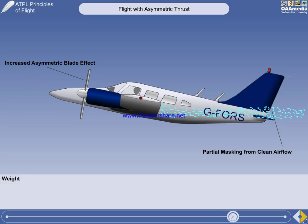Any weight increase will require a higher angle of attack at any given speed. This will have the result of increasing asymmetric blade effect, with a bigger yawing moment, and partially masking the fin and rudder, making them less effective.